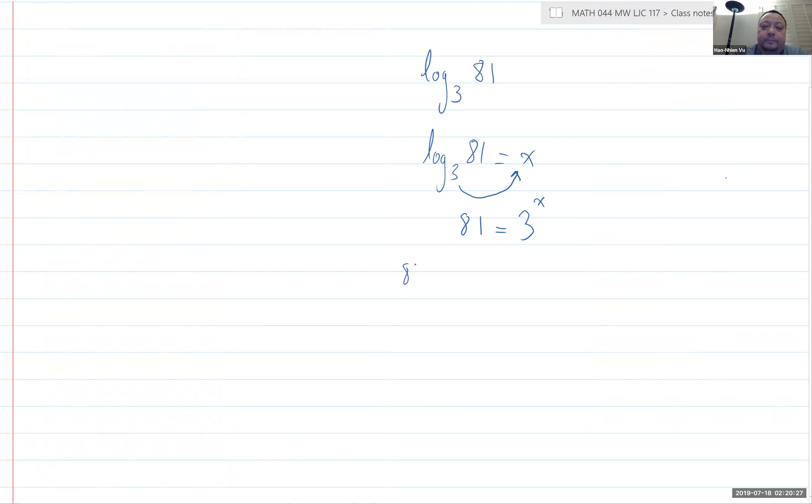Well, 81 is 9 times 9. And each of the 9 is 3 times 3. So 81 is the same as 3 to the 4th because I have 4 of these factors of 3 here. So 81 is the same as 3 to the 4th and it's supposed to be equal to 3 to the X. And so in order for that to happen, X has to be equal to 4.